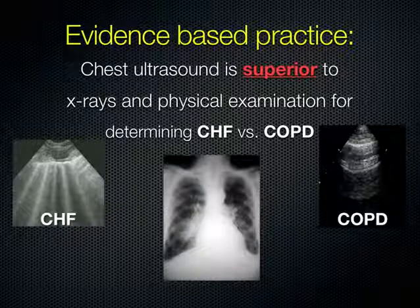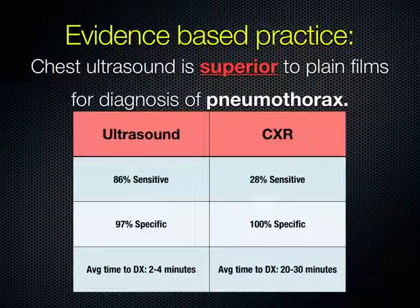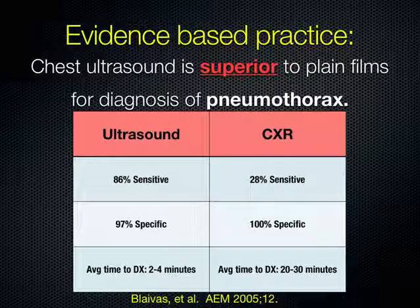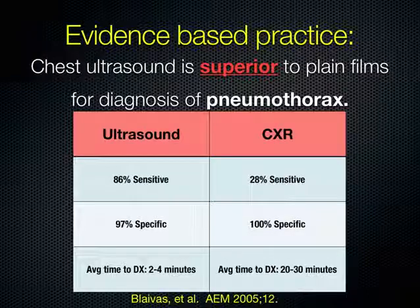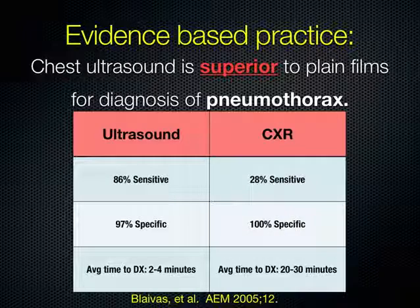It's also been shown that chest ultrasound is superior to plain films for diagnosis of pneumothorax, especially in a supine patient. Ultrasound is much more sensitive than chest x-ray and similarly specific. In a supine patient with a pneumothorax, the air is anterior and a chest x-ray is not likely to show a pleural line. The average time to diagnosis of pneumothorax with ultrasound is on the order of a few minutes, whereas there can be significant delays in patient management if you rely on chest x-ray.